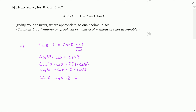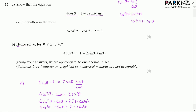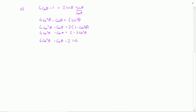For part b, I'm asked to hence — meaning use what we've just done — solve the equation on this interval. The only difference is that instead of θ we're now dealing with 3x. So we can use this equation just substituting θ for 3x, giving us 6cos²(3x) − cos(3x) − 2 = 0.